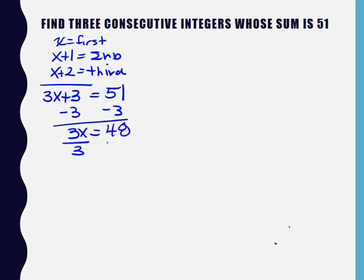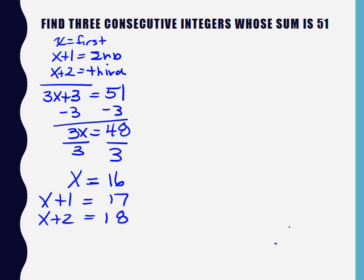If I subtract 3 from both sides, I'm going to get 3X equals 48. If I divide by 3, X is going to equal 16. So that's my first integer, my second is 17, and my third is 18. If you want to double check to see if you're right, just add them up. 16 and 17 is 33, and 33 and 18 is 51, so you know you're right. So your integers are 16, 17, and 18.